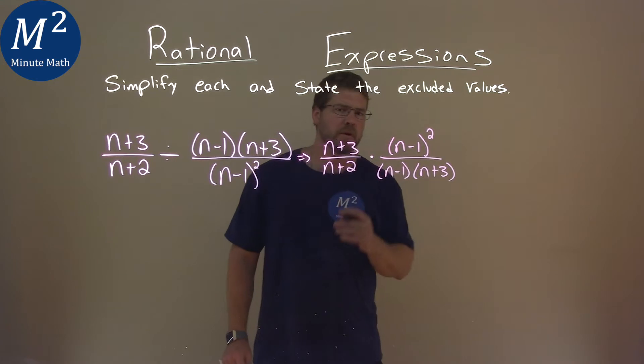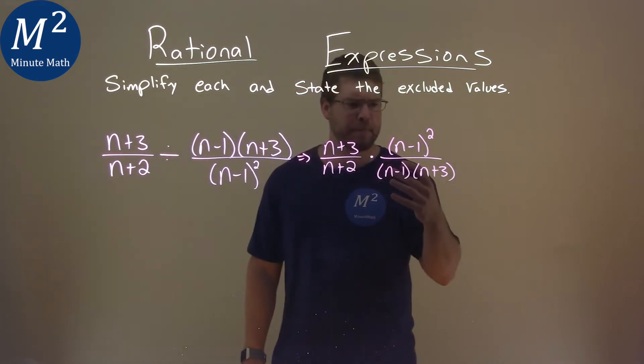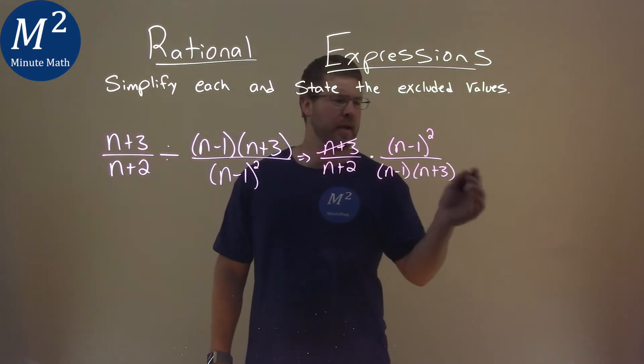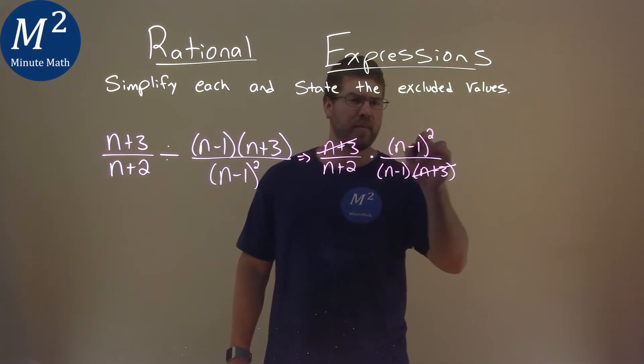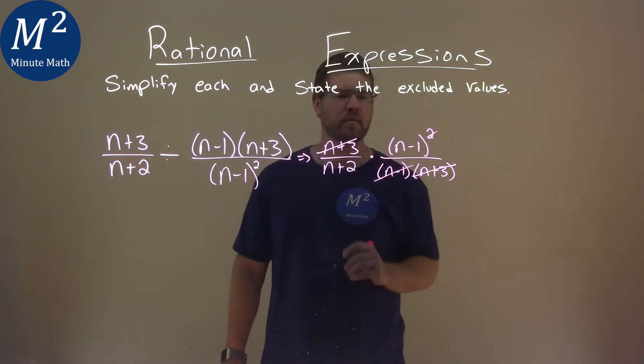Okay, now we're going to try to see what we can eliminate. Well, I see an n plus 3 and an n plus 3 here in the numerator and the denominator. And then we have n minus 1 and we have n minus 1 squared. So we take one of these out and we get rid of the square.